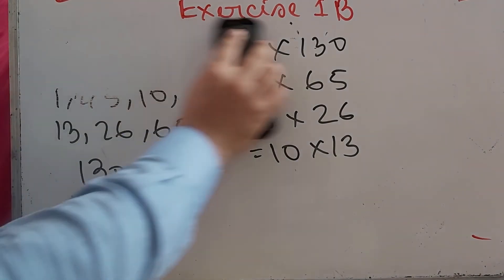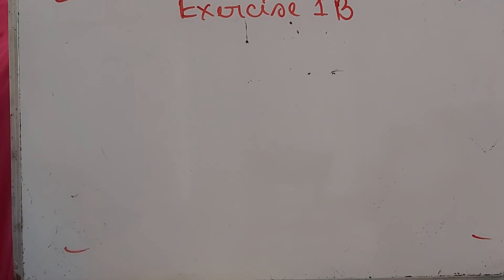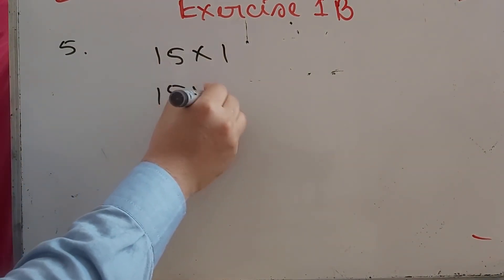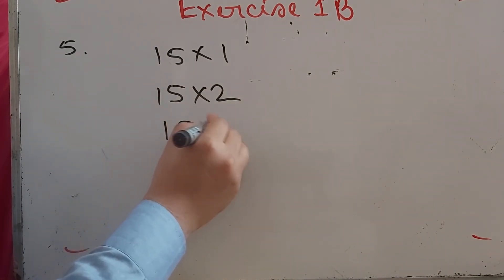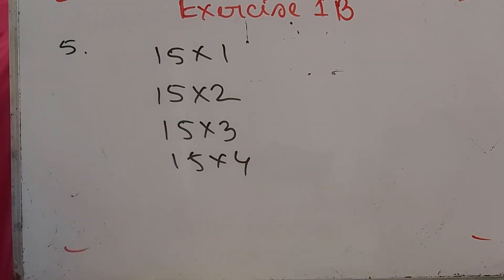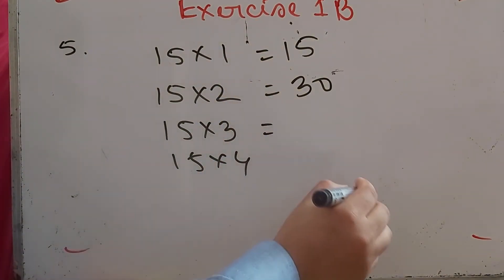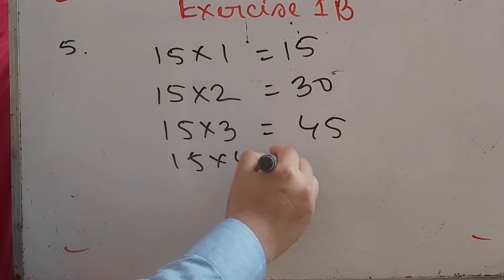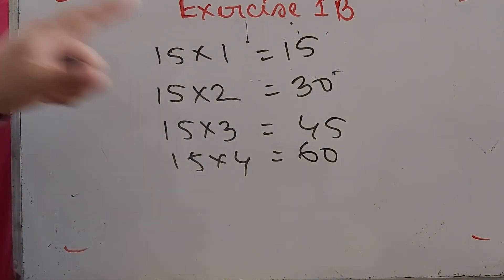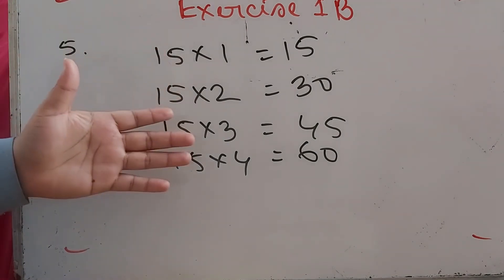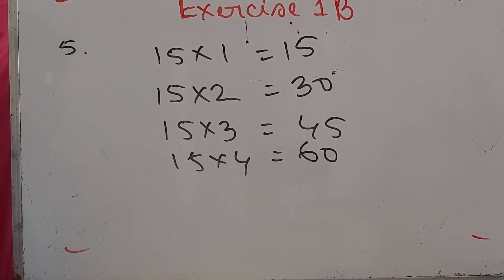Number 5: Write down multiples of 15. We multiply 15 by 1, 2, 3, 4, and so on: 15, 30, 45, 60 — these are all multiples of 15. You can find many more in the same way. Thank you very much for watching the class. See you soon.